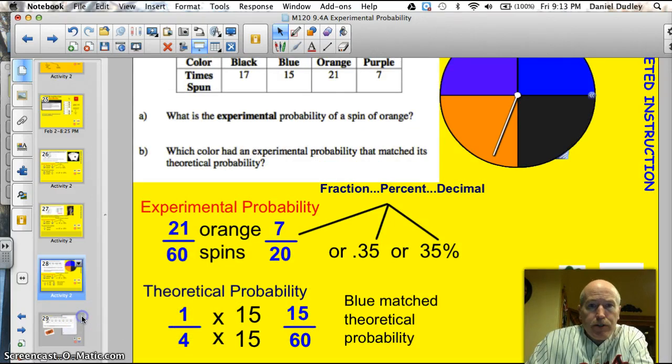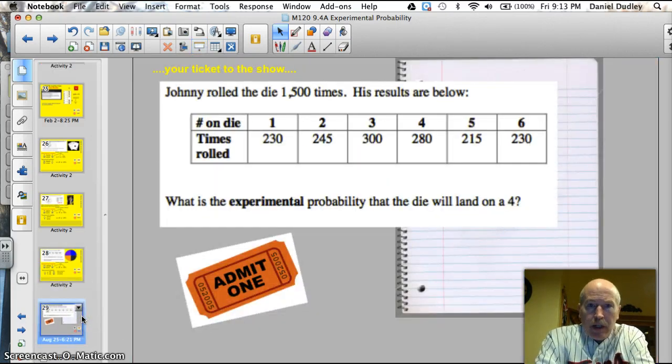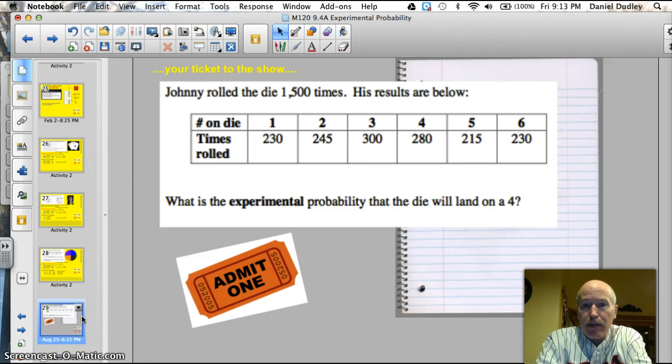All right. Here is your ticket to the show tonight. Johnny rolled the die 1,500 times. And his results are below. What is the experimental probability that the die will land on 4? You got your results. Go ahead and see if you can find that out. Make sure you express that in lowest terms. Thank you very much.